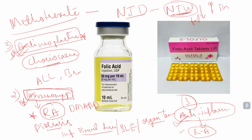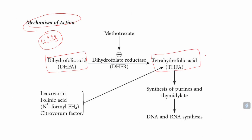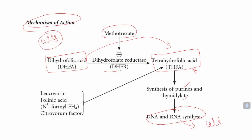Now let's look at the mechanism of action. In our body, in the cells, dihydrofolic acid is converted into tetrahydrofolic acid — the active form — in the presence of dihydrofolate reductase. This tetrahydrofolate helps in synthesizing purines, pyrimidines, and thymidylate, and is important in the production of DNA and RNA, and further helps in cell division.